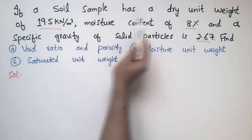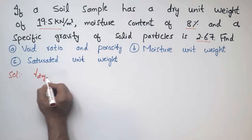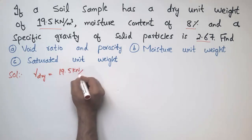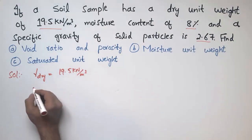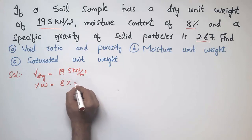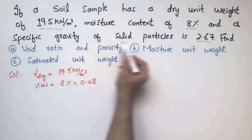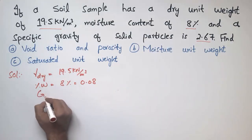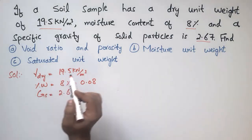To start with the solution, I will write the given data from the problem. The dry unit weight of the soil sample is 19.5 kN/m³. The moisture content of the soil sample is 8%, or in decimal form 0.08. The specific gravity of the soil particles G_s is equal to 2.67.